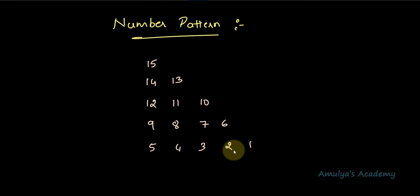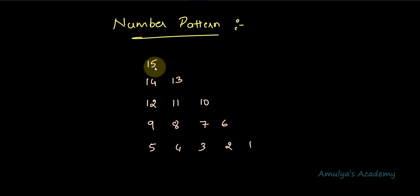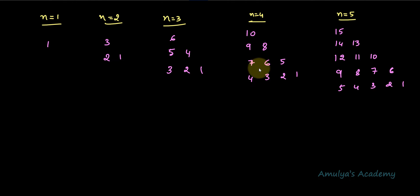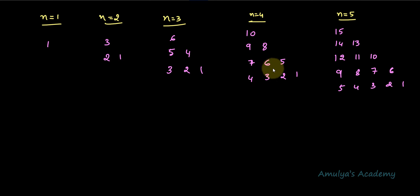So it is like this: 1 2 3 4 5 6 7 8 9 10 11 12 13 14 15. If the number of rows is 4, the pattern will start from 10 and end at 1. We need to print the numbers in descending order in a right triangle shape.